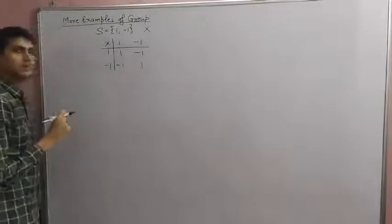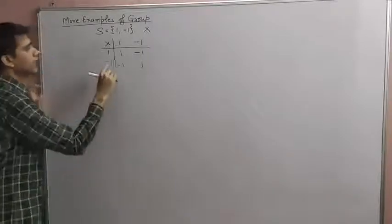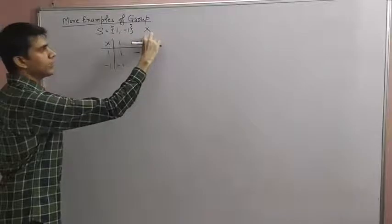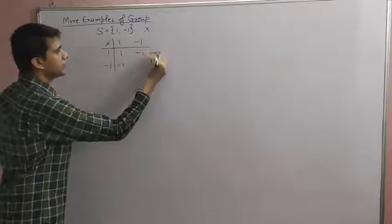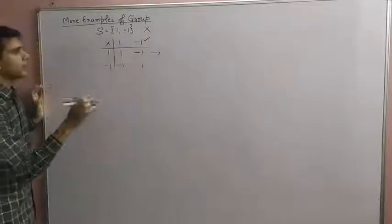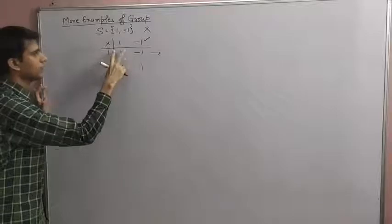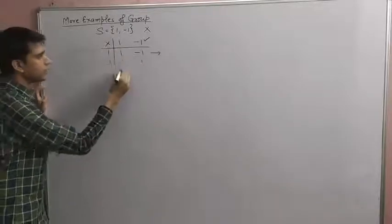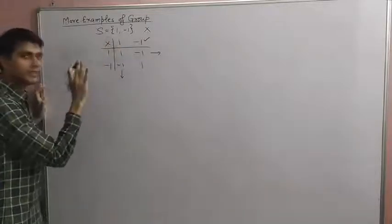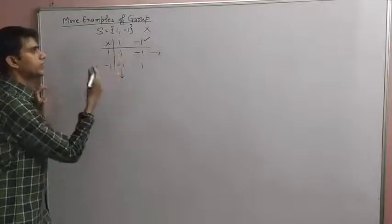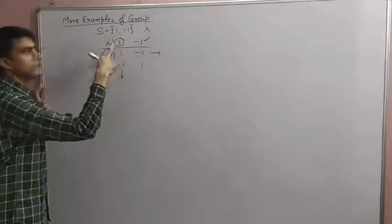Next we find the identity. Look at the composition table and find a row that exactly matches the title row, and a column that exactly matches the side column. The first row — 1, -1 — matches the title row, and the first column — 1, -1 — matches the side column.